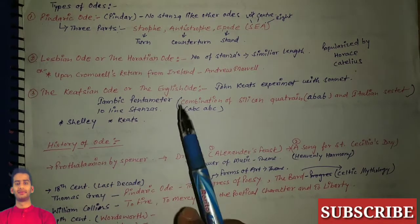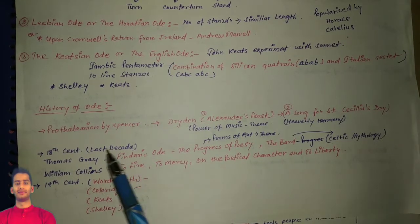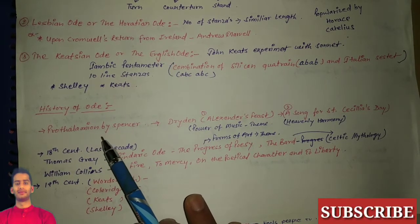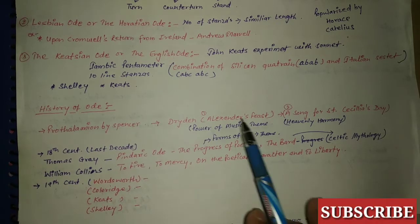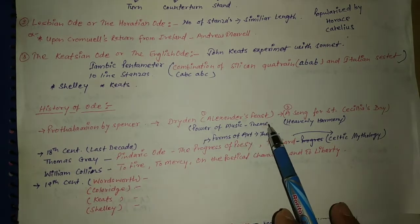Shelley and Keats used this kind of odes. History of odes: first is Prothalamion by Spenser, later Dryden - Alexander's Feast was the work.